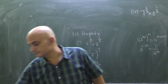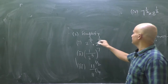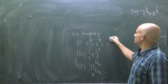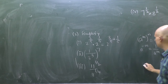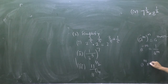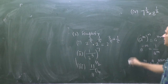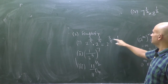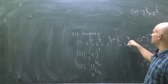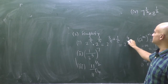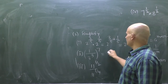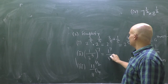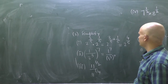Now question number 3 asks us to simplify. Since the bases are the same, powers can be added. We use the rule a^m × a^n = a^(m+n). So it becomes 2 to the power (3/5 + 1/5). The denominators are the same, so the numerators can be added directly.